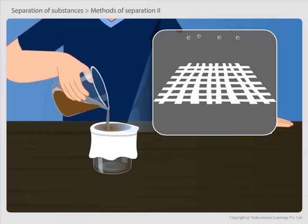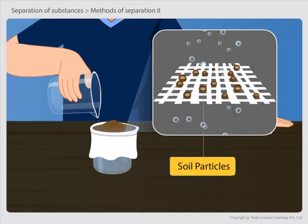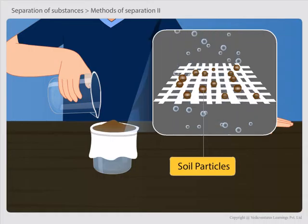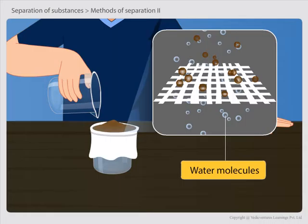Let us learn how a cotton cloth acts as a filter. In a piece of cloth, small holes or pores are there in between the woven threads. It is actually these small pores that act as a filter.